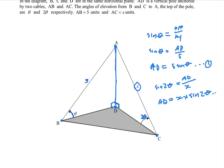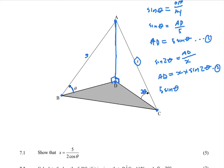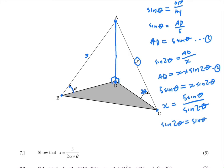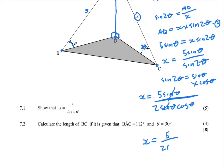Now we have two equations for AD. Equating them: 5 sine theta equals X sine 2 theta. Dividing both sides by sine 2 theta gives X equals 5 sine theta divided by sine 2 theta. Using the trig identity sine 2 theta equals 2 sine theta cos theta, we get X equals 5 sine theta divided by 2 sine theta cos theta. Sine theta cancels, leaving X equals 5 divided by 2 cos theta. That's how you do 7.1.